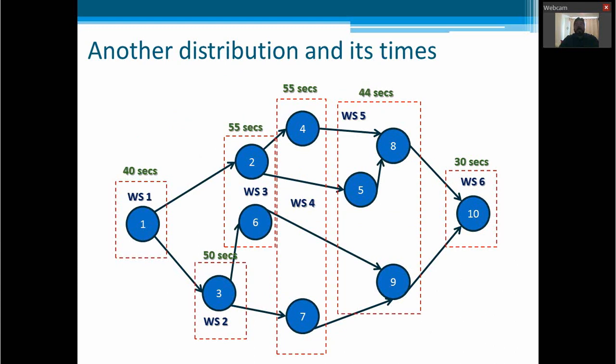Another distribution and its times will be as it is showing in this slide, where we have workstation 1 with only one task, workstation 2, workstation 3 with tasks 2 and 6, workstation 4 with tasks 4 and 7, workstation 5 with 5, 8, and 9, and workstation 6 with task number 10. In green we have the time for each workstation.